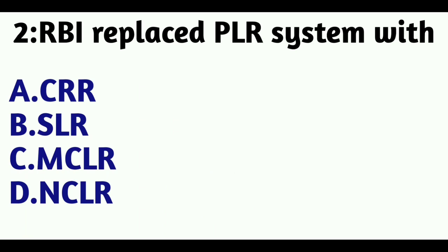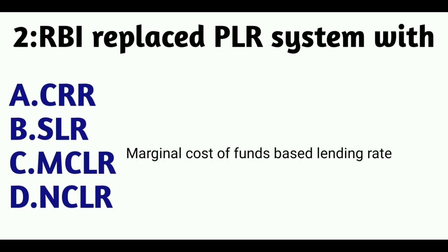Question 2: RBI replaced the PLR system with — Option A: CRR, Option B: SLR, Option C: MCLR, Option D: NCLR. The answer is Option C, MCLR. The full form of MCLR is Marginal Cost of Funds Based Lending Rate.